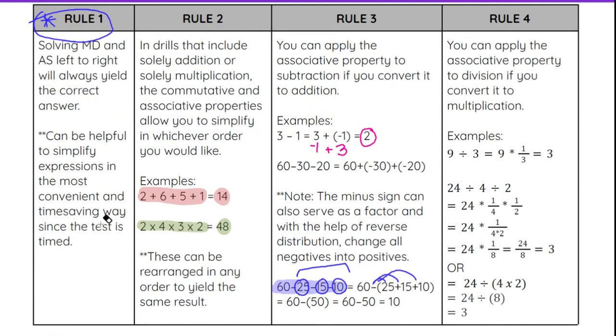It means the same thing, but that can be helpful because then you could actually just add up the 25, 15, and 10 to get 50, and then you're just doing 60 - 50. And 60 - 50 is 10, and that would get you the correct answer.